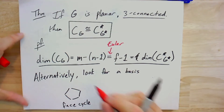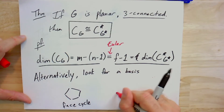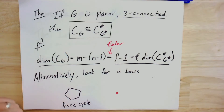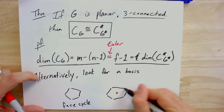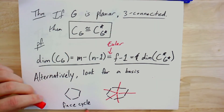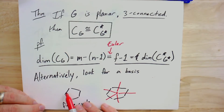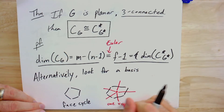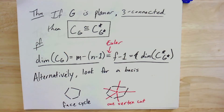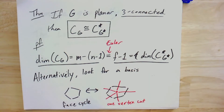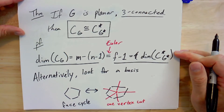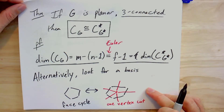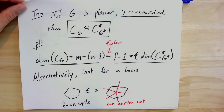The face cycles form a basis for the cycle space of G. You then consider the dual cut to each face cycle — the set of edges coming out of that face in the dual. The edge set of the face cycle maps to the set of edges forming the dual cut, which is a one-vertex cut in the dual. This correspondence also gives you the isomorphism explicitly, so you can write out the linear map relating these two vector spaces directly via the duality relationship.